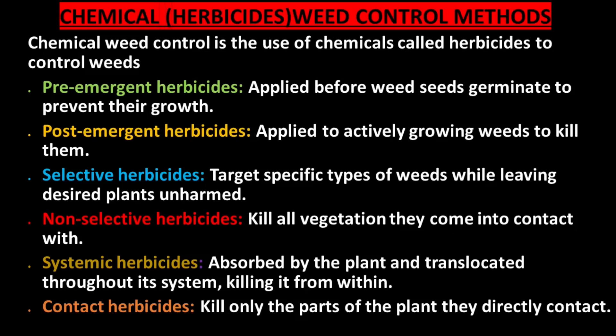Chemical weed control is the use of chemicals called herbicides to control weeds. Types of herbicides include pre-emergent herbicides, applied before weed seeds germinate to prevent their growth; post-emergent herbicides, applied to actively growing weeds to kill them; selective herbicides, which target specific types of weeds while leaving desired plants unharmed; non-selective herbicides, which kill all vegetation they contact; systemic herbicides, absorbed and translocated throughout the plant killing it from within; and contact herbicides, which kill only the part of the plant they directly contact.